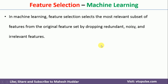Now the very first question is: what is feature selection? Feature selection is a process of selecting the most relevant subset of features from the original set of features by dropping redundant, noisy, and irrelevant features. That is, given a set of features, sometimes the dataset may contain some redundant, noisy, or irrelevant features. We need to remove all those and come up with the subset of features which are most relevant to that particular problem definition.